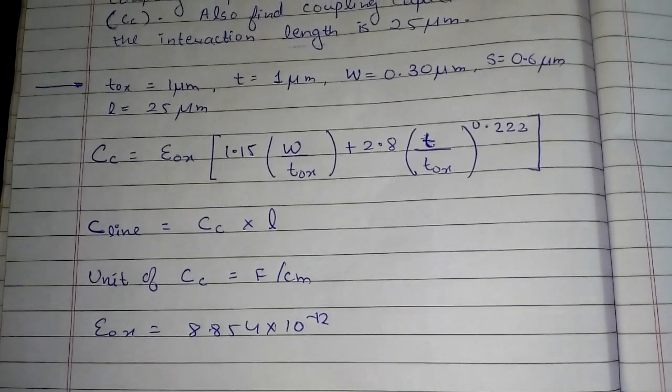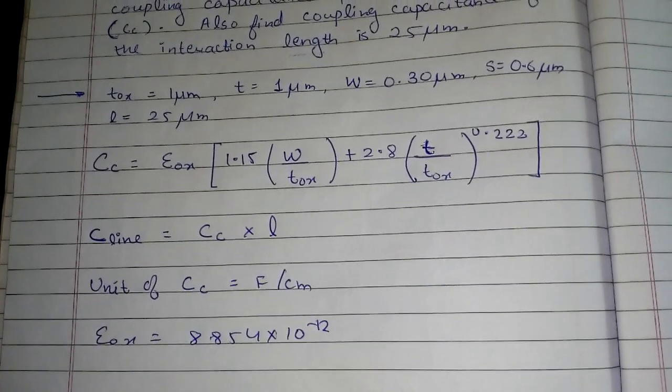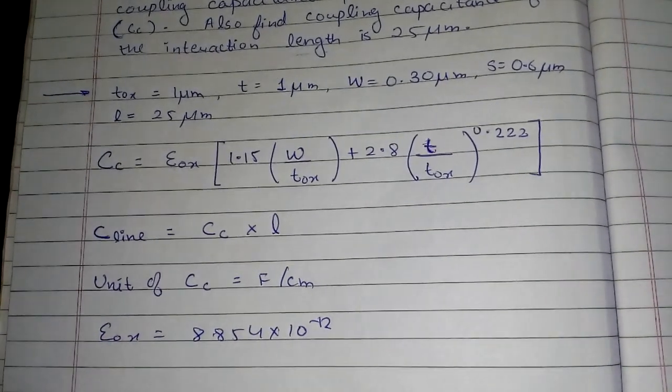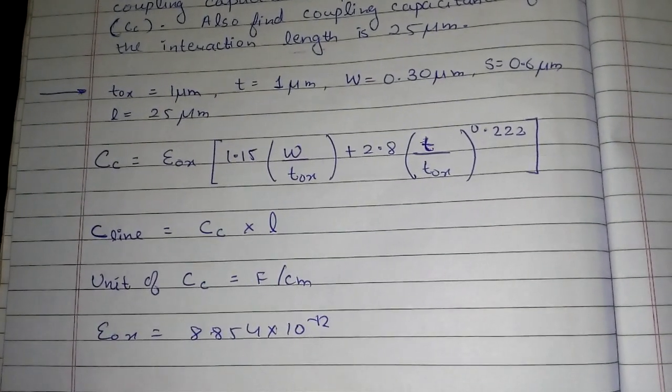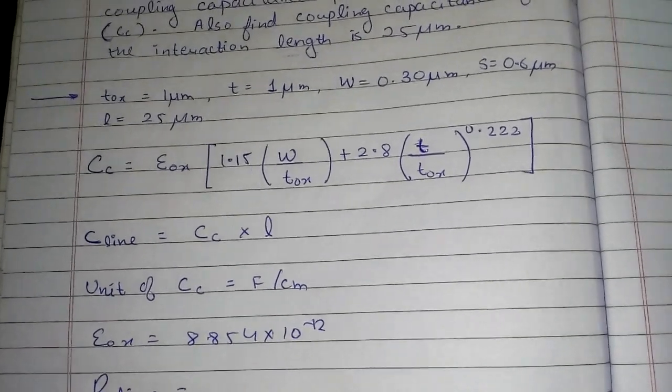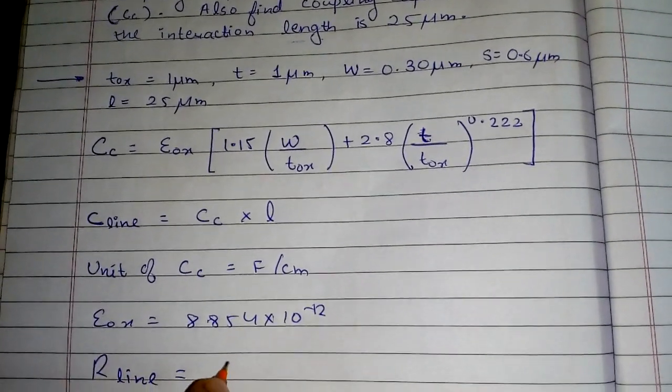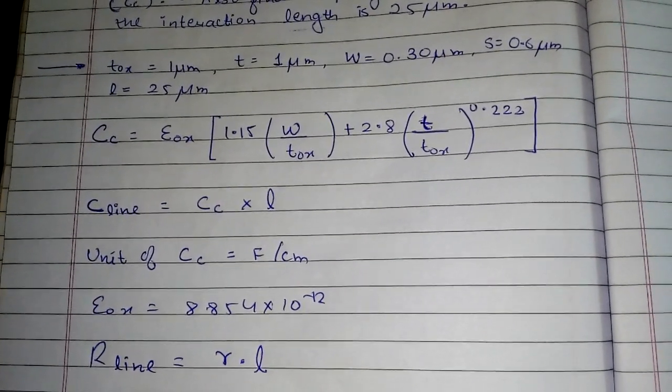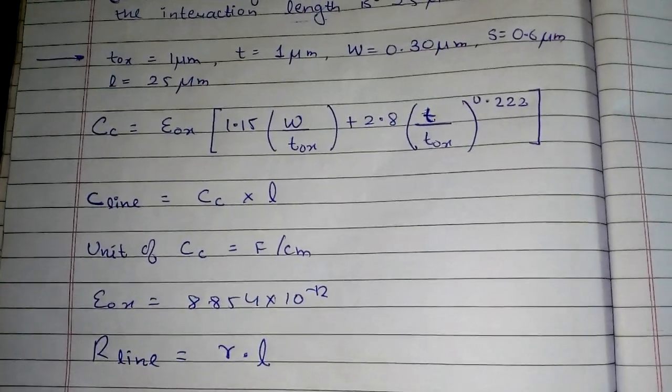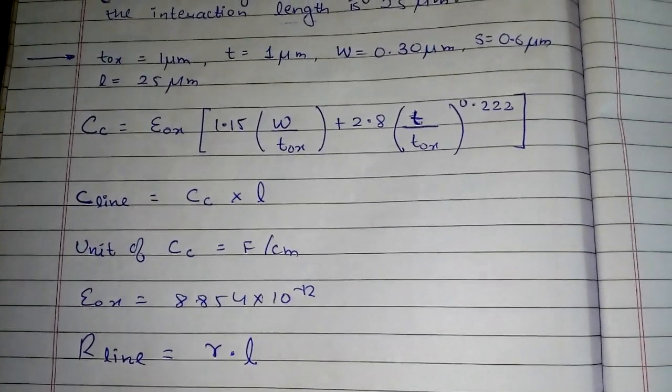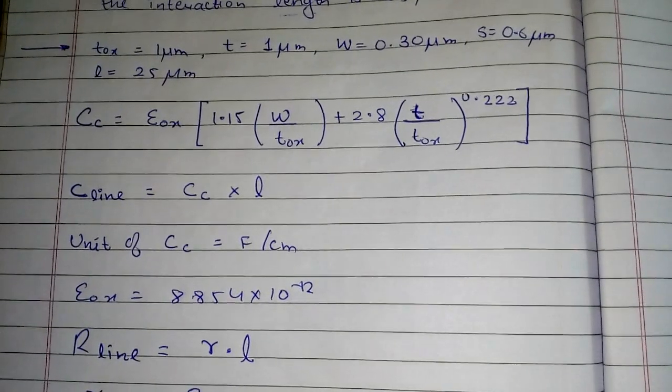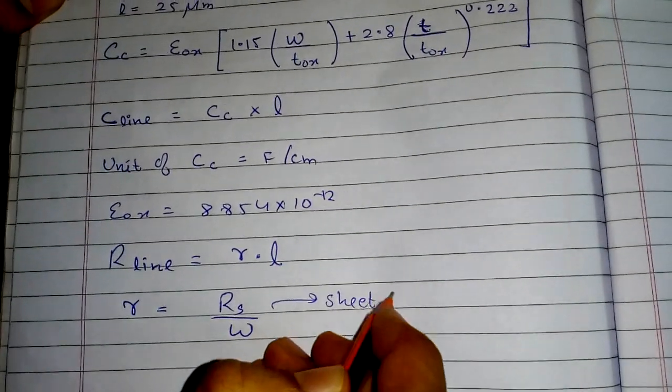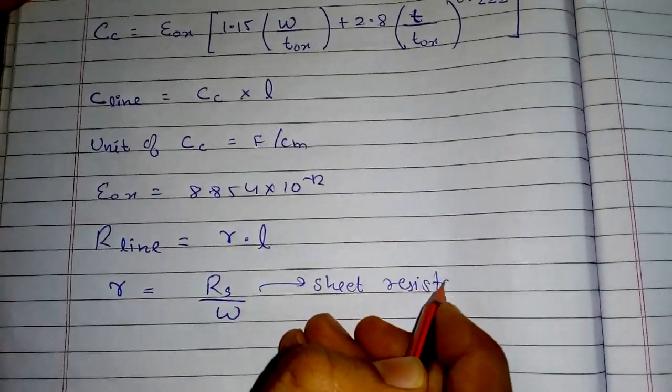Now another thing is, suppose you are asked to find resistance of the line. We have found the capacitance C_line, but if you are asked to find R_line, R_line is nothing but small r multiplied by l, that is length. Now what is small r? Small r is Rs upon w.